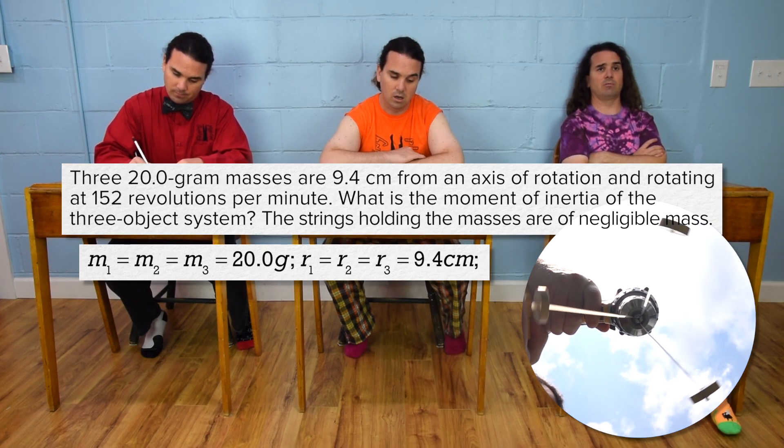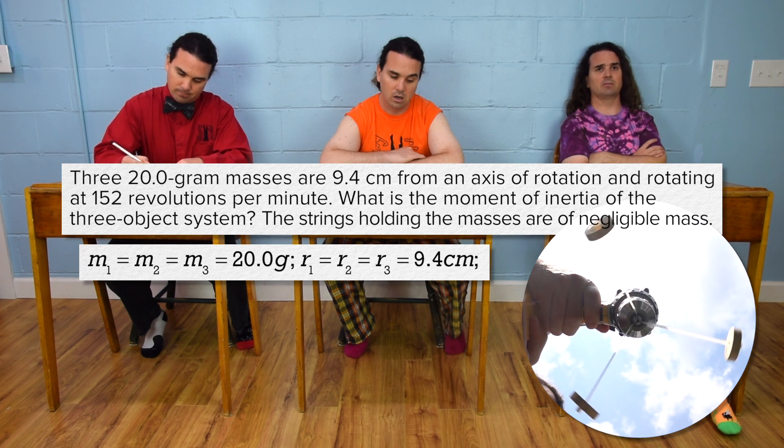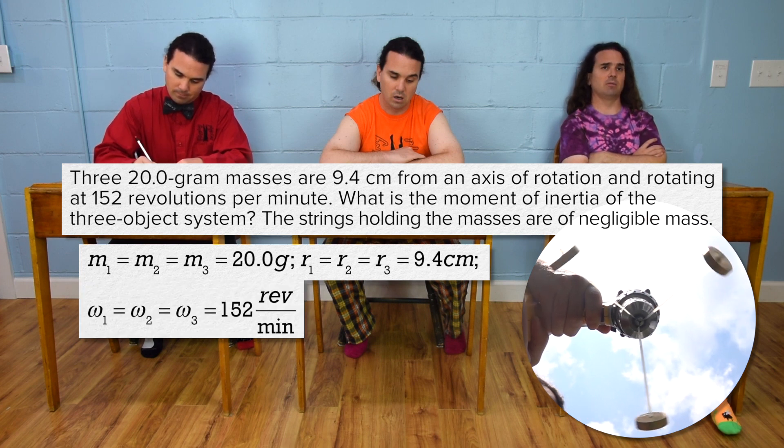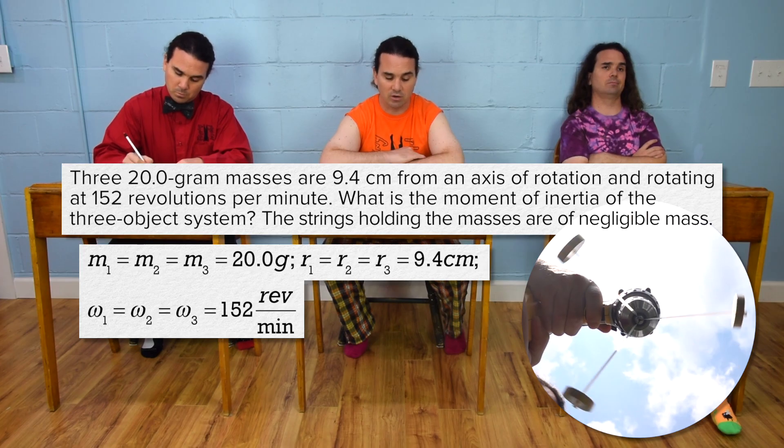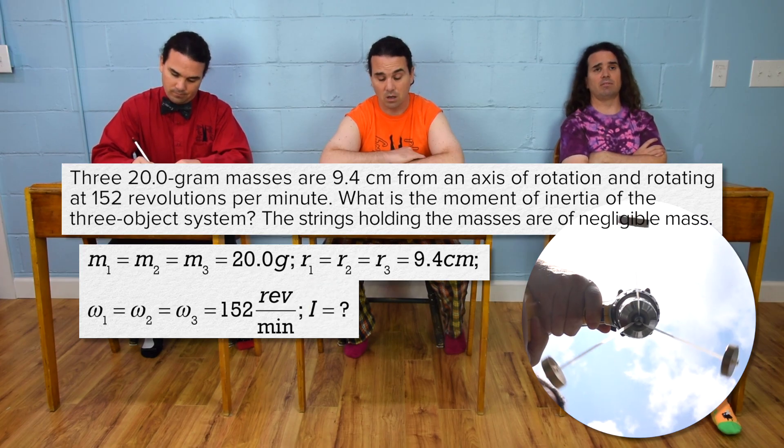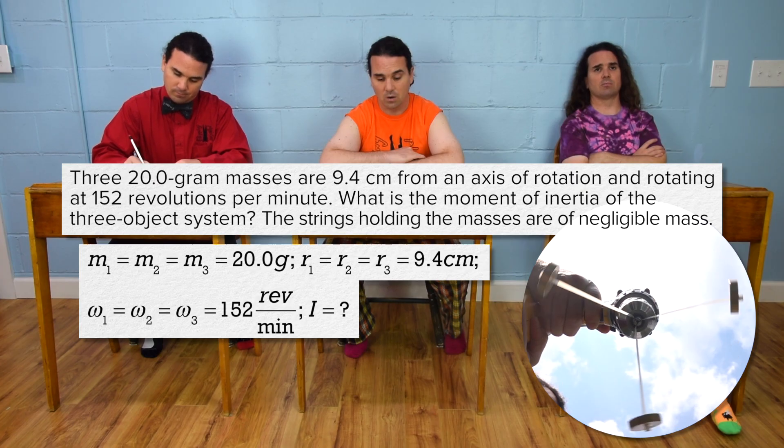Radius 1, 2, and 3 each equal 9.4 centimeters. And angular velocity of each of them equals 152 rpms. What is the moment of inertia of the three object system? Moment of inertia capital I equals question mark.